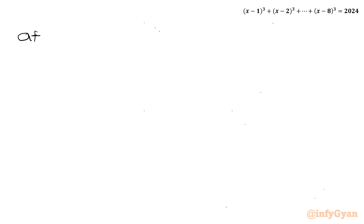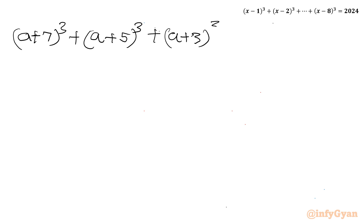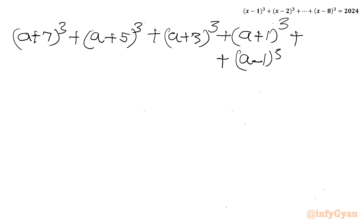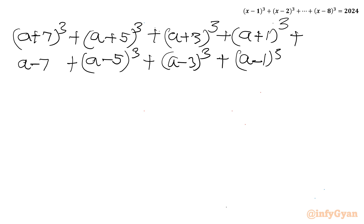Applying the substitution, the equation becomes: (a+7)³ + (a+5)³ + (a+3)³ + (a+1)³ + (a−1)³ + (a−3)³ + (a−5)³ + (a−7)³ = 8·2024.